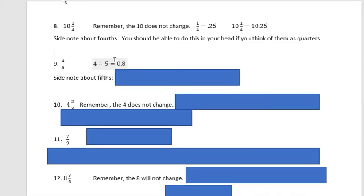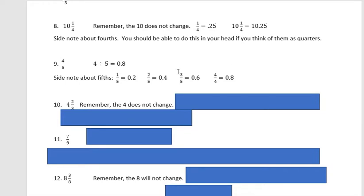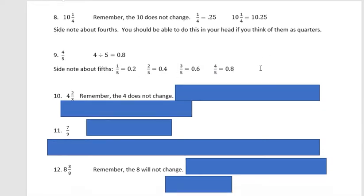Four fifths. Four divided by five is 0.8. I don't need to round. That's all I have to do. And a side note about fifths is those kind of work out nicely. One fifth is 0.2. Two fifths is 0.4. Three fifths is 0.6. And four fifths is 0.8. So those are kind of nice, easy ones to know.